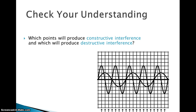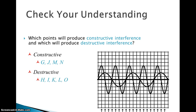At point I, one wave has a positive value and the other has a negative value, so when they meet it would be destructive — they take away energy from one another. The same with point K: one is above, one is below, so that would be destructive. To review: constructive points are G, J, M, and N; destructive points are H, I, K, L, and O.